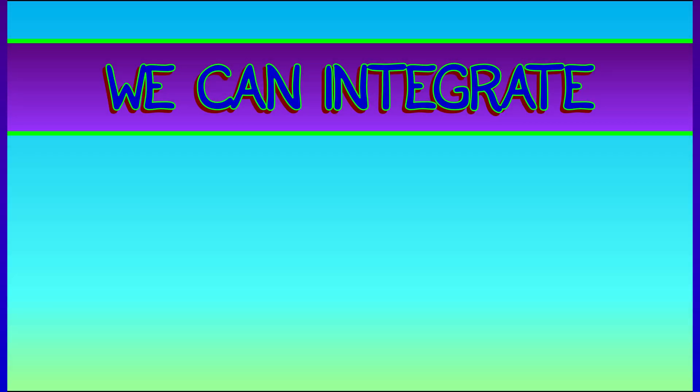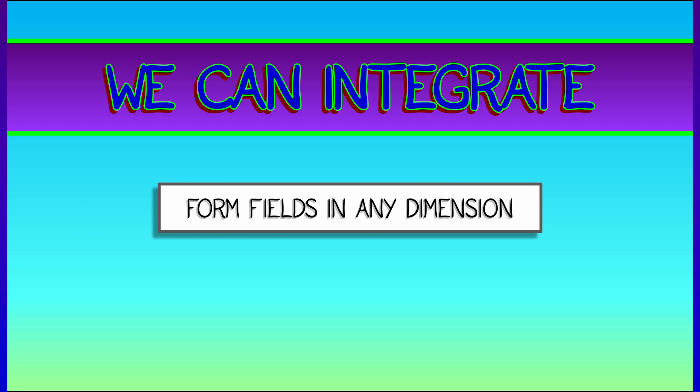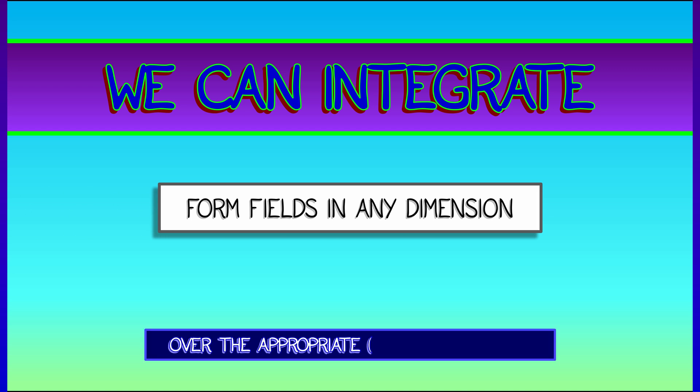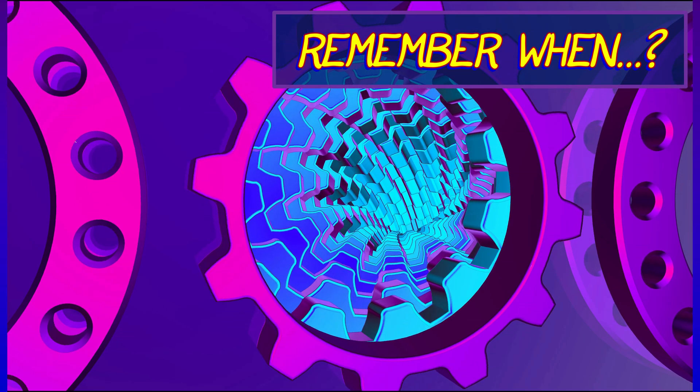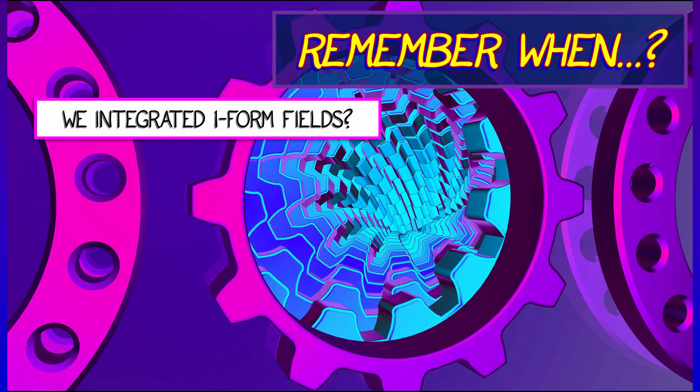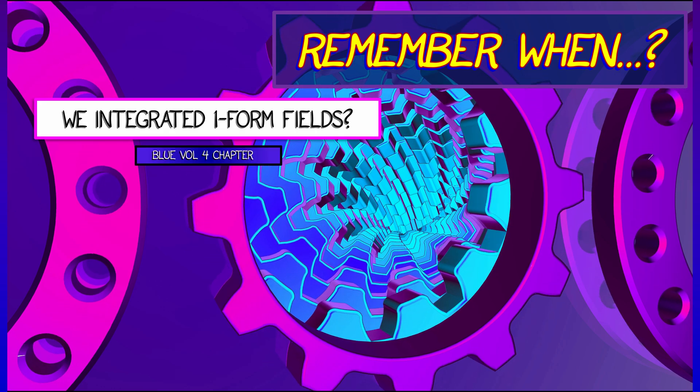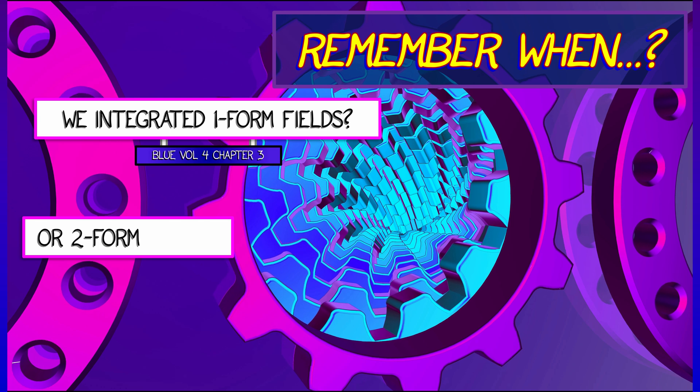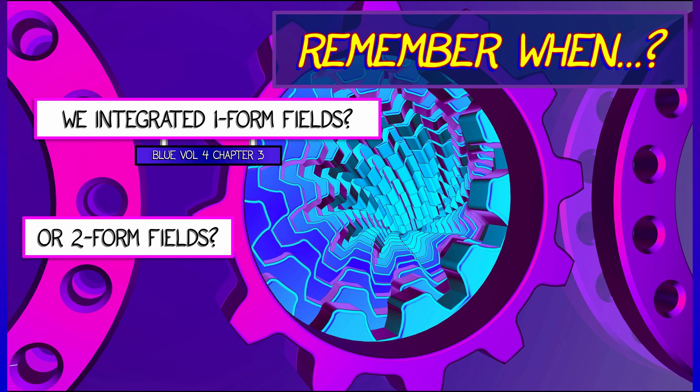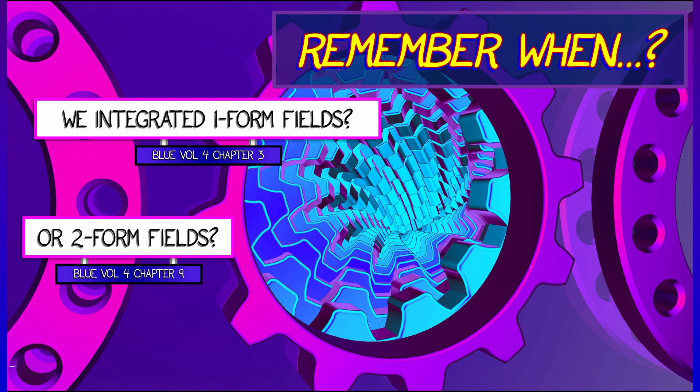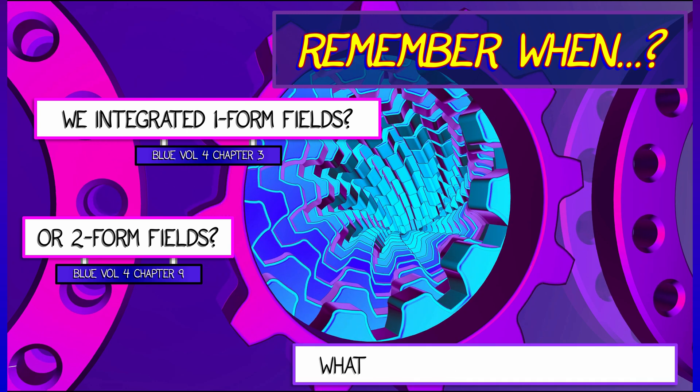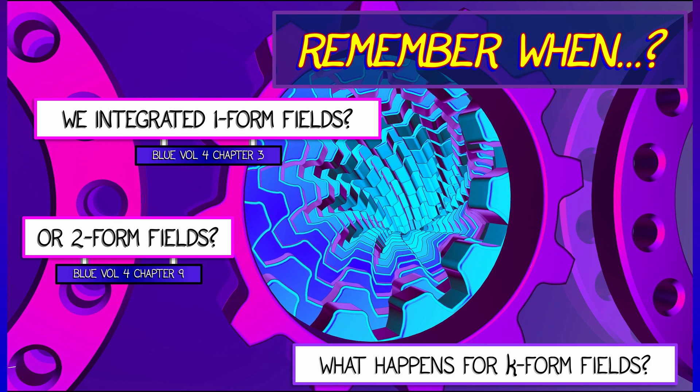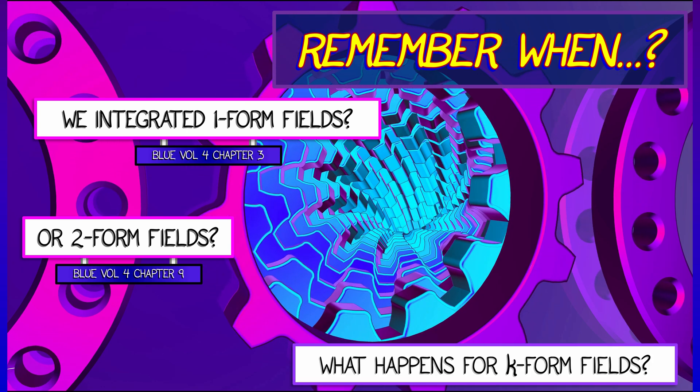It's time to start integrating form fields in arbitrary dimensions as well. Let's think about how that might work. It's probably a good idea at this point to go back and remember how we have integrated one-form fields. Remember that back in Chapter 3? Or two-form fields? Do you remember that back from Chapter 9? How do we generalize what we did there to arbitrary k-form fields in higher-dimensional spaces?